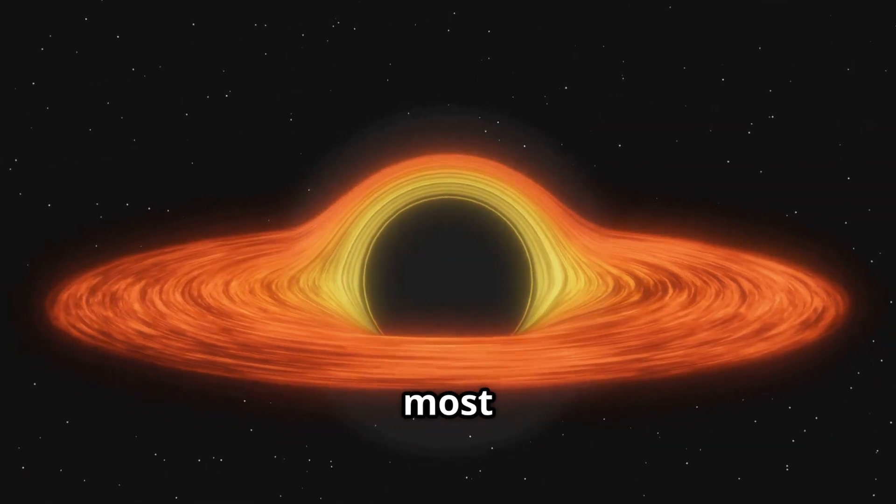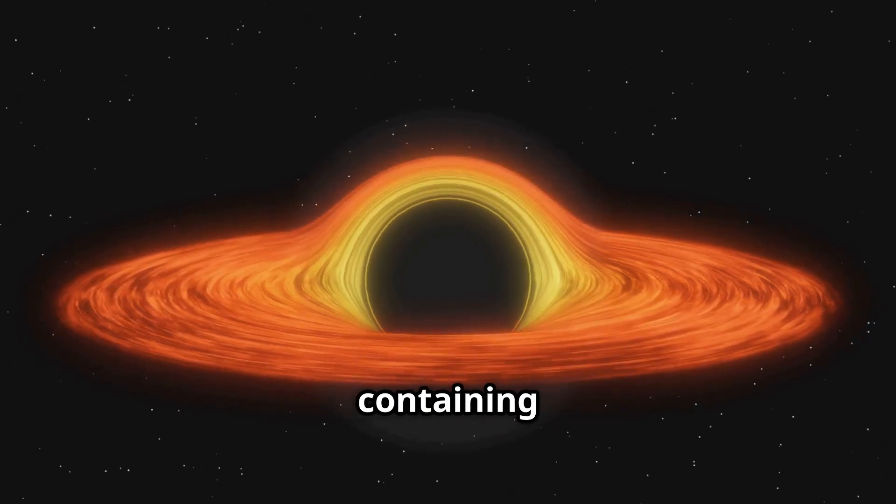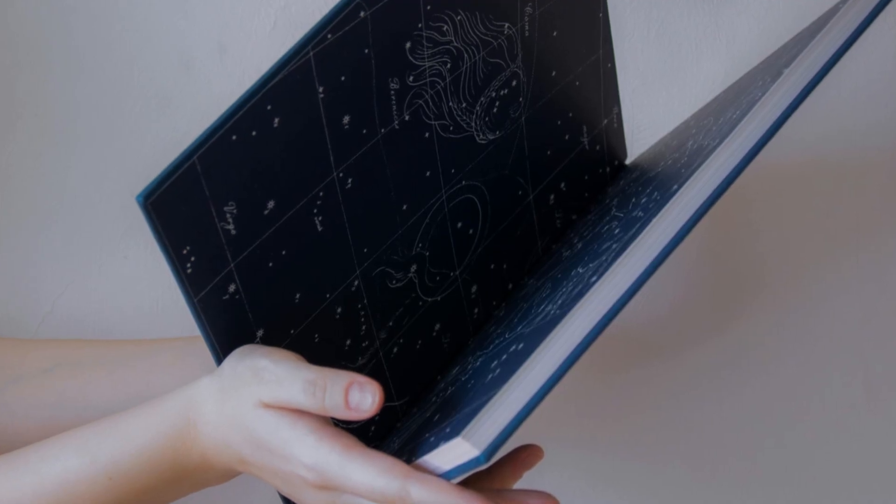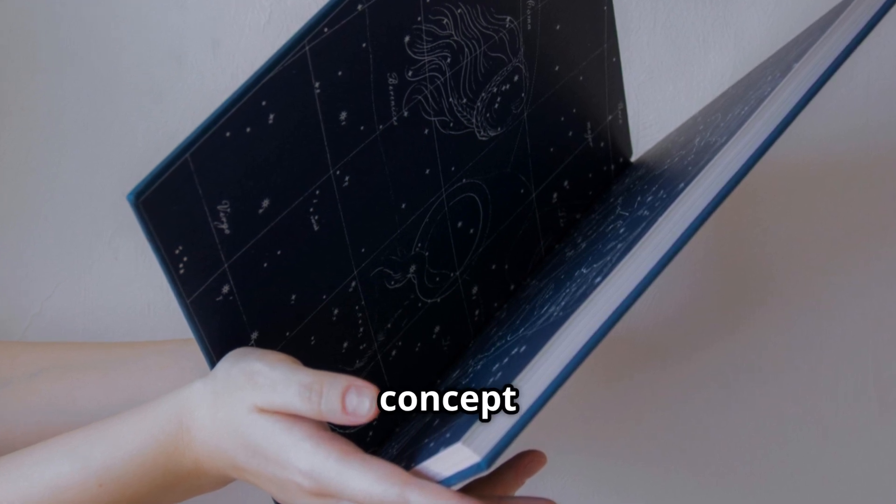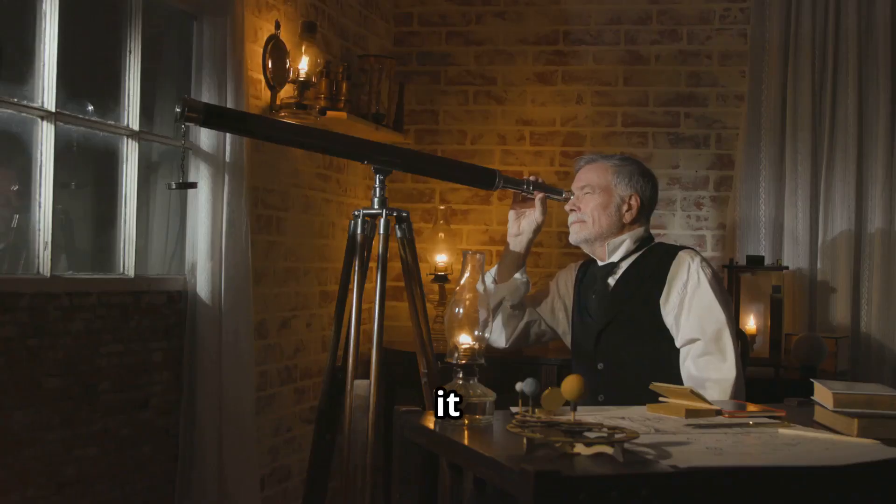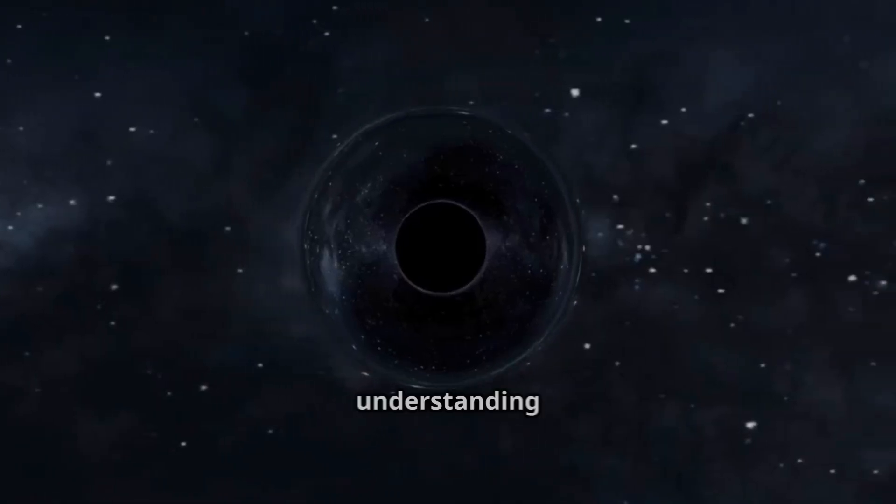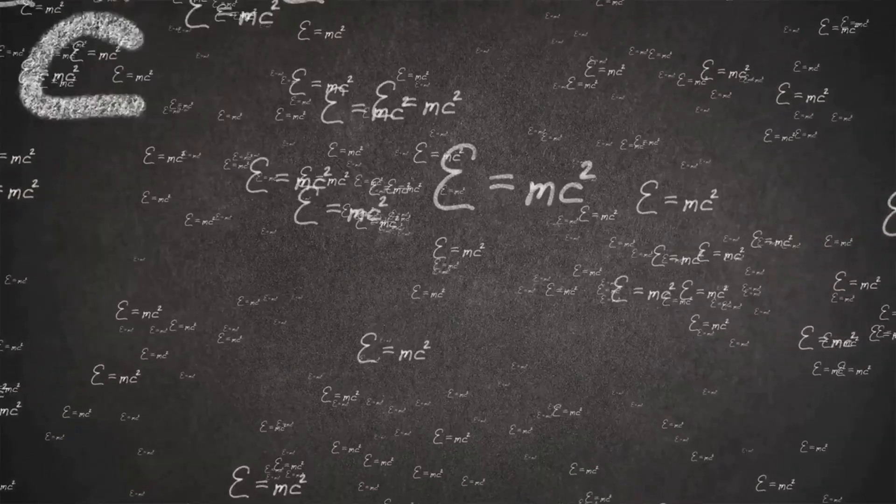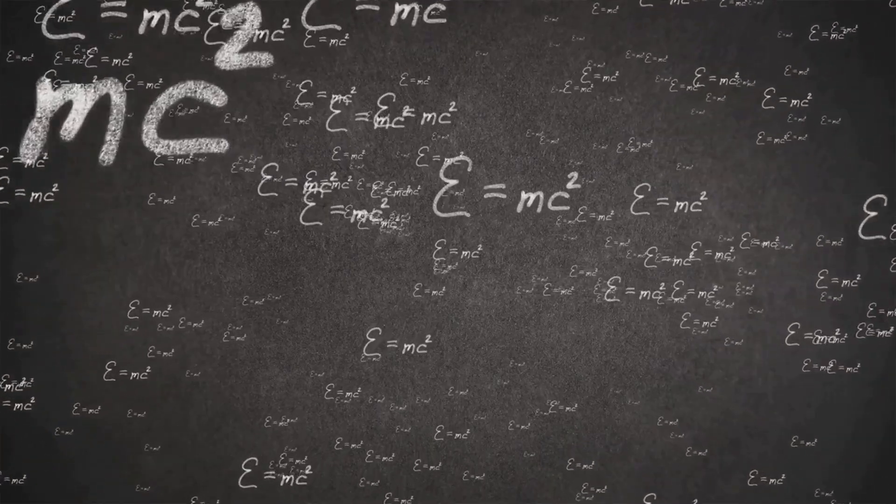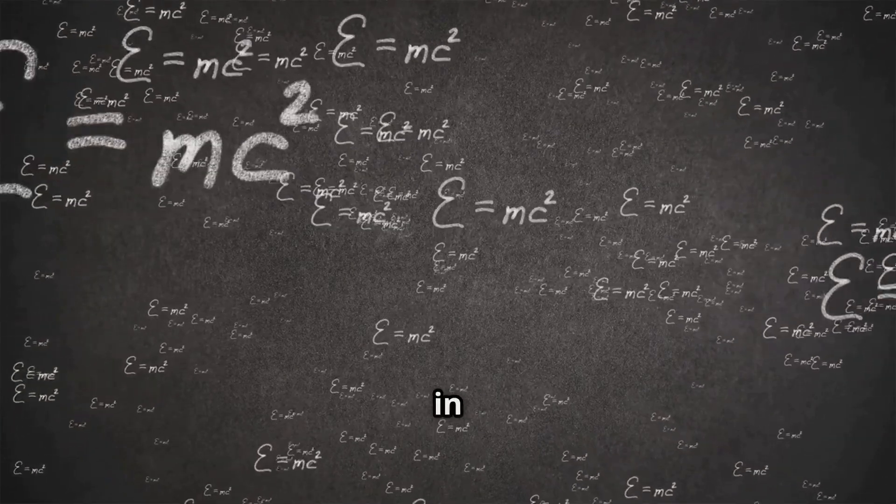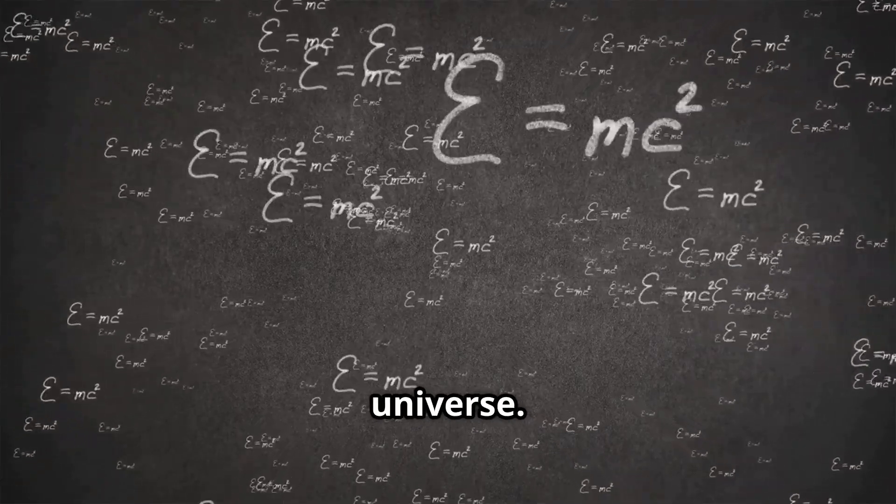Black holes are among the most extreme objects in the universe, containing singularities at their centers. Historically, the concept of black holes dates back to the late 18th century, but it wasn't until the 20th century that our understanding of these objects began to take shape. Theoretical frameworks such as general relativity have played a crucial role in explaining the nature of black holes and their role in the universe.